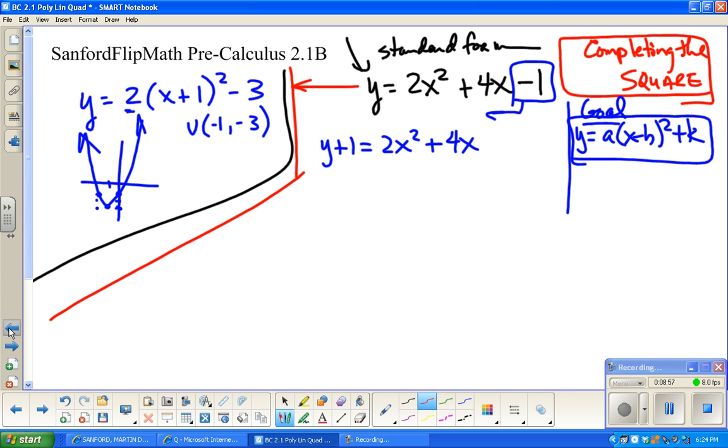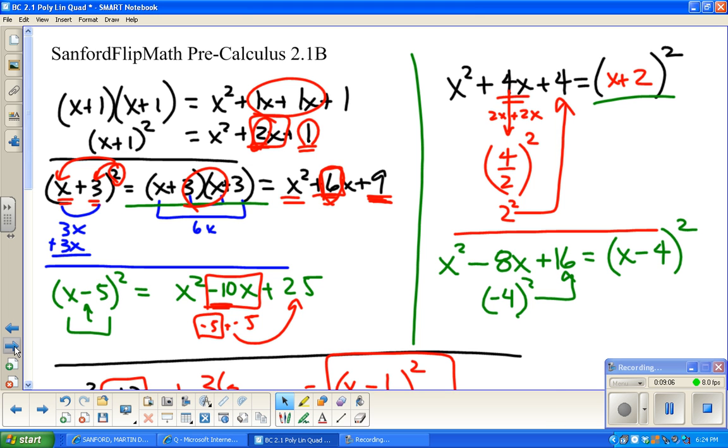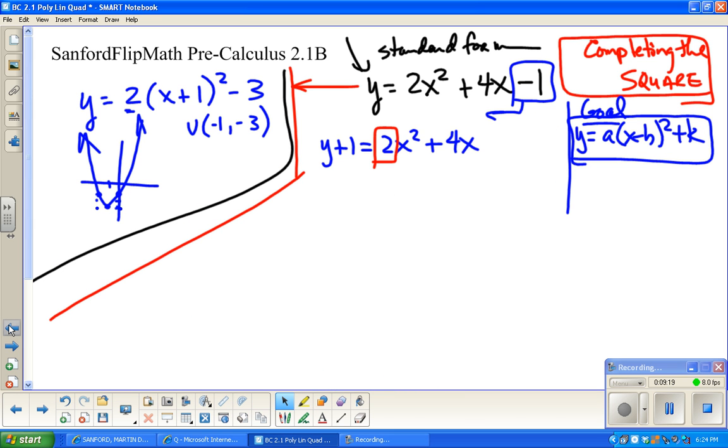Now, the next concern I have is this 2 is also in the way. Just a reminder, every single one of these that we did just a second ago did not have a coefficient in front of the x squared. So, in order to do the completing the square thing, I'm going to take this a and I'm going to factor it out. So y + 1 stays the same. I'm going to factor out, I'm going to undistribute, so now this is x² + 2x. I factored out a 2 from both of these.